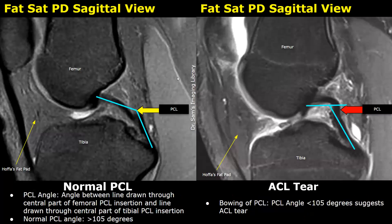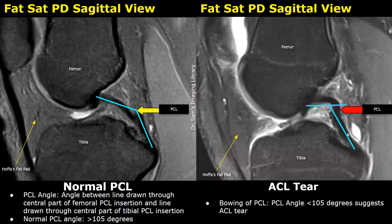A PCL angle is also used. It is the angle between the line drawn through the central part of the femoral PCL insertion and the line drawn through the central part of the tibial PCL insertion. This angle is usually more than 105 degrees in normal cases. When there is an ACL tear, the PCL angle can change and will be less than 105 degrees, suggesting an ACL tear.